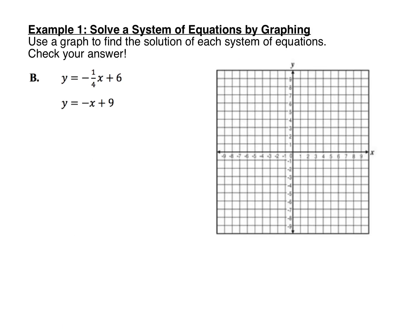Here's another system to solve by graphing. Start by graphing the first line: y equals negative one-fourth x plus six. The y-intercept is six, so place a dot at six on the y-axis. The slope is negative one over four, so go down one, then right four. Keep doing that until you're out of space, then go up one, left four to get the other side of the line. Connect the dots to complete the first line.